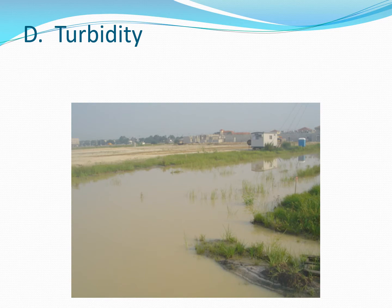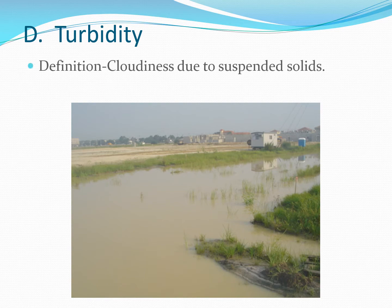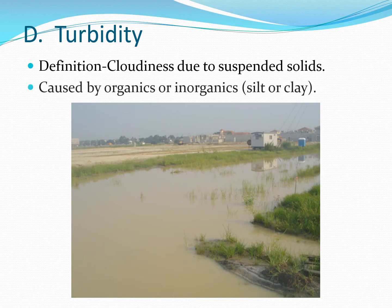A related characteristic is turbidity — cloudiness due to suspended solids. Some of those solids could be caused by organic material that's washed in, or even living things like algae and phytoplankton, which can make the water look cloudy. More times than not, it's inorganics — silt or clay that have washed in due to a rain event that caused erosion.